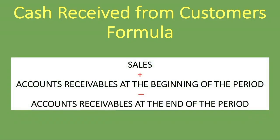Here is the formula: we take the sales amount for the period, we add the accounts receivable at the beginning of the period, then we deduct the accounts receivable at the end of the period. Sales is found in the statement of comprehensive income or income statement; accounts receivable figures are found in the statement of financial position or balance sheet.